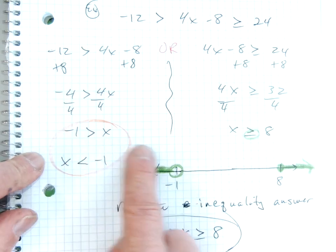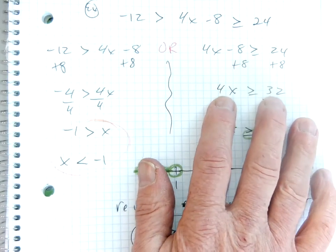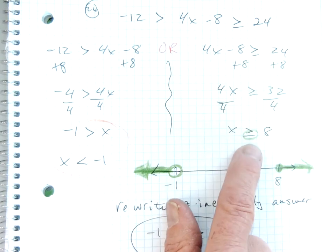So I rewrote it. Came over to the right hand side and solved this equation. Plus 8 plus 8, gives you 32. Divide by 4, divide by 4, x is greater than or equal to 8.